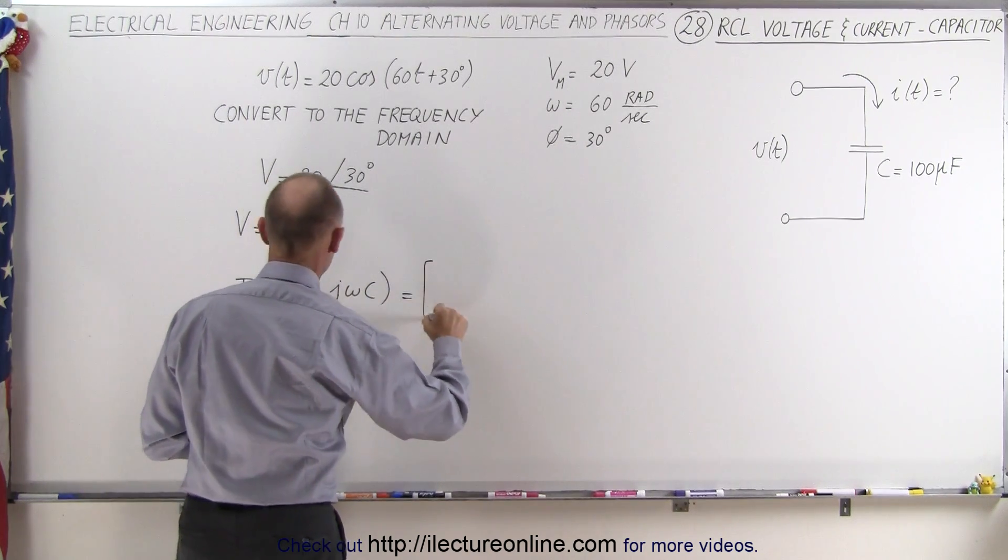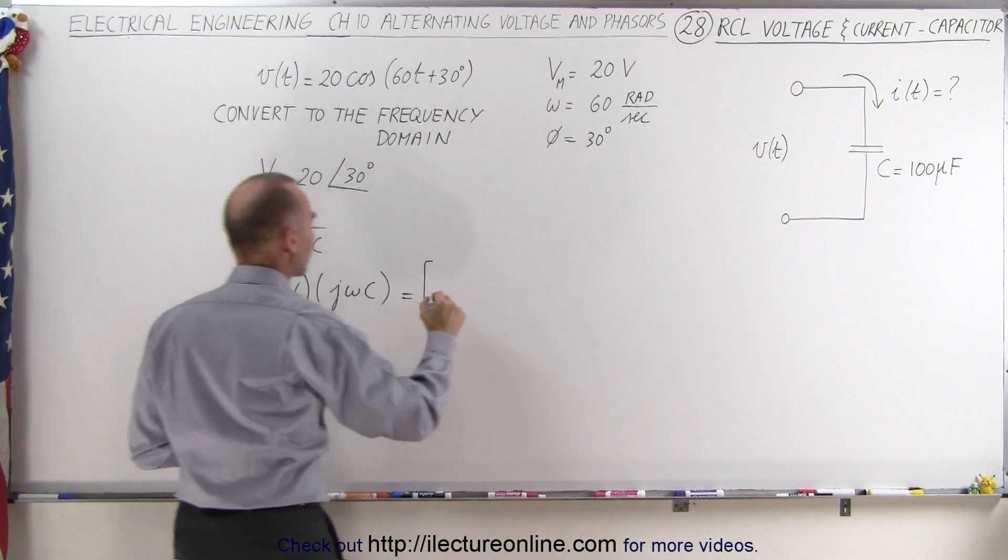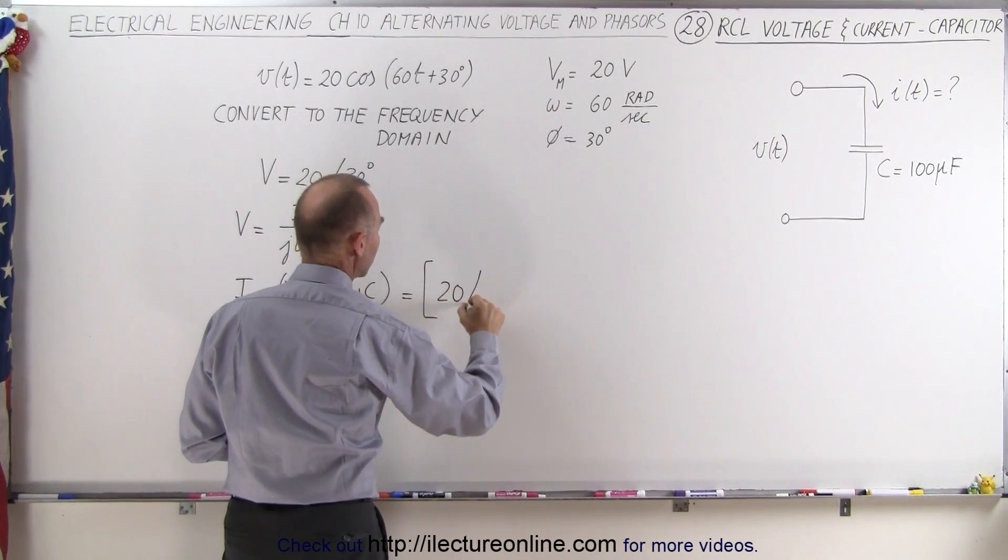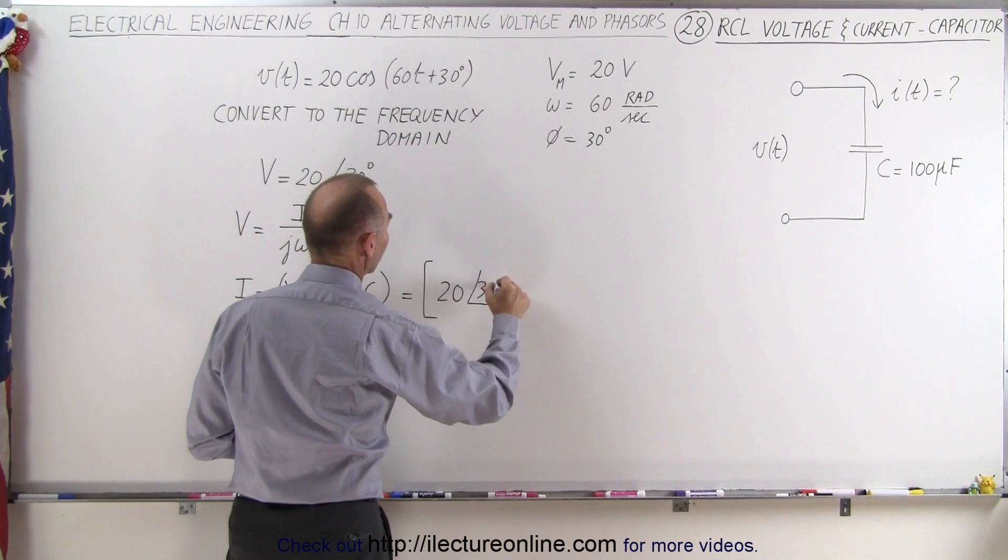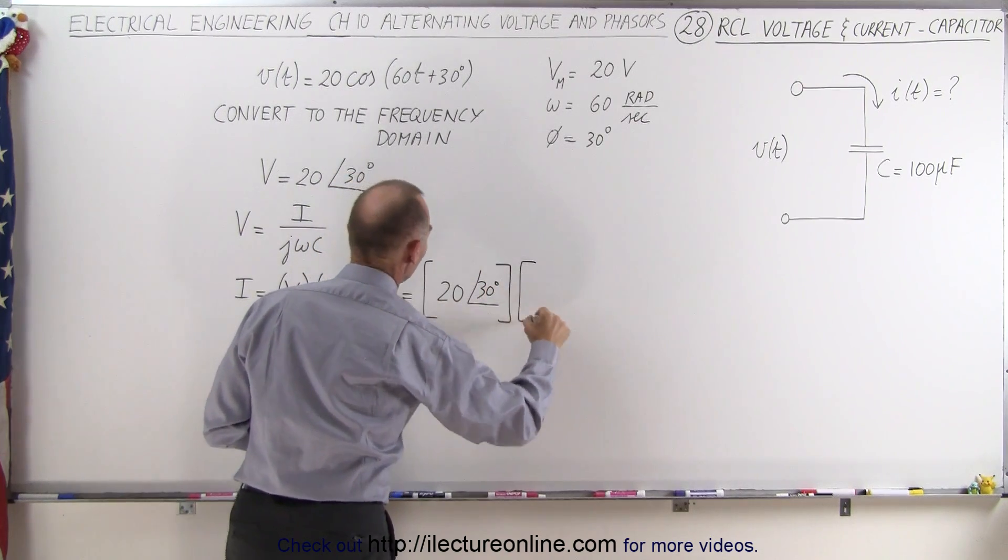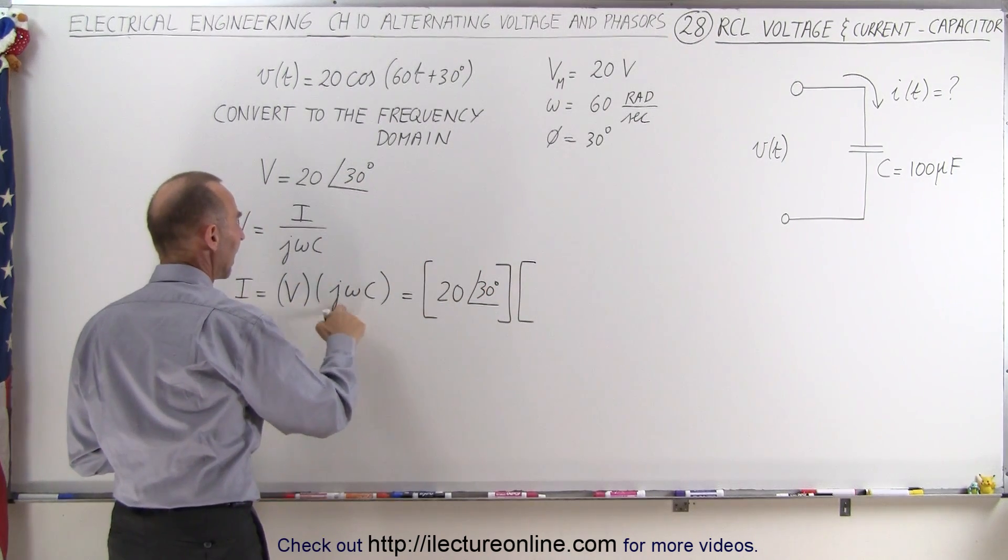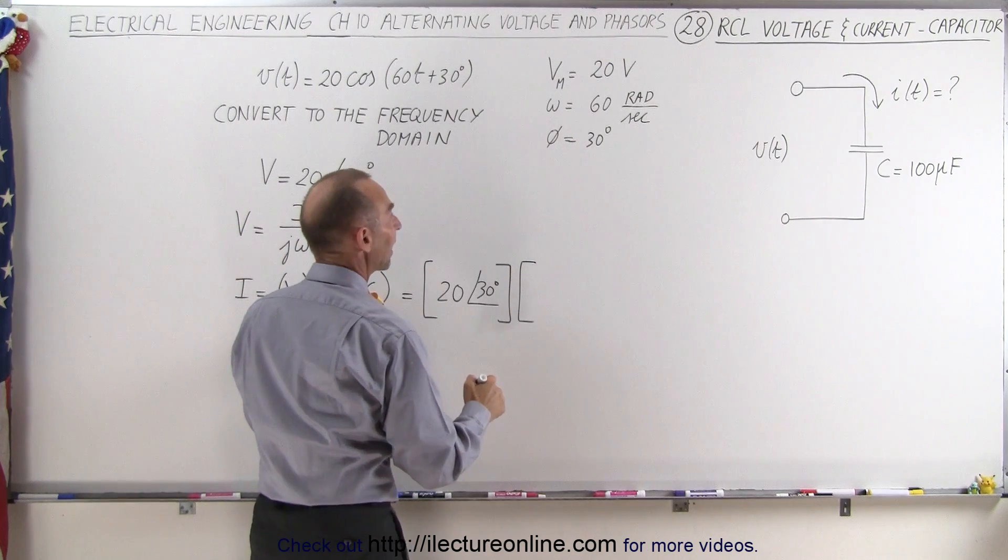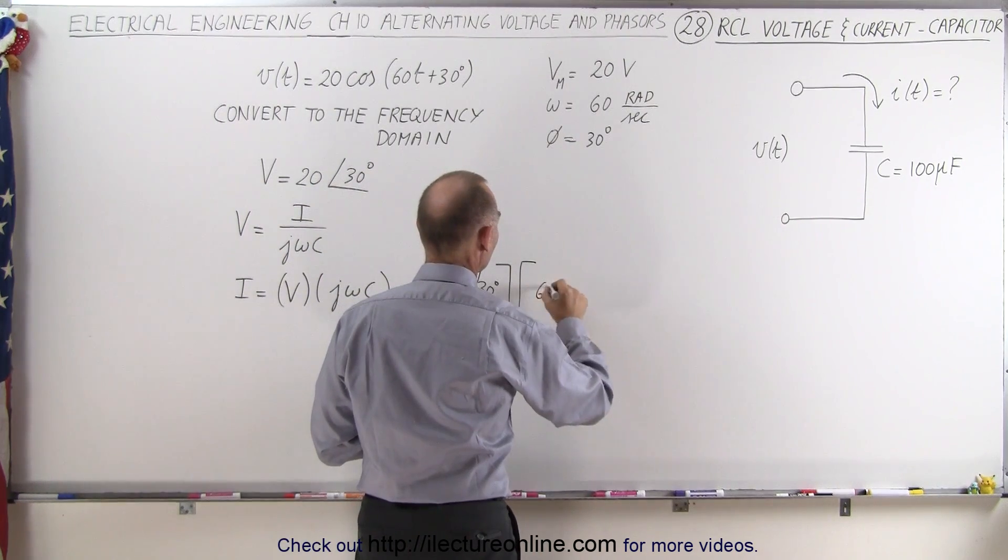So this is going to be equal to the voltage defined right here. That's the amplitude of 20 with a phase angle of 30 degrees, and we're going to multiply that times ωc times j. So ω times c, ω is 60.